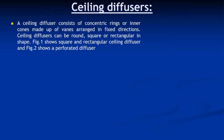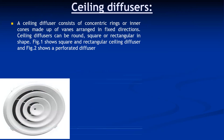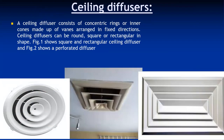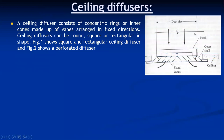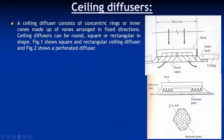Ceiling diffusers mainly consist of concentric rings or inner cones made up of vanes arranged in fixed directions. A ceiling diffuser can be round, square, or rectangular. As the name implies, they are generally fitted at the ceiling of the building. Perforated diffusers are also used, where perforations are provided instead of slots.